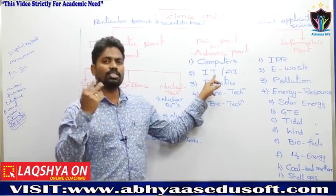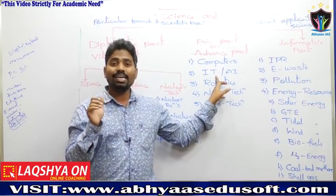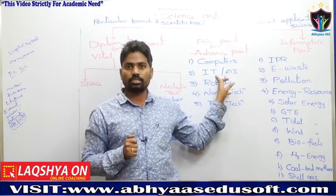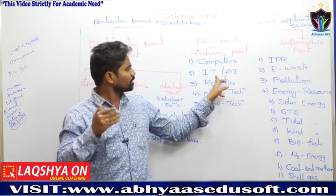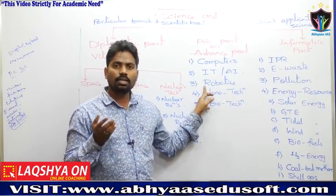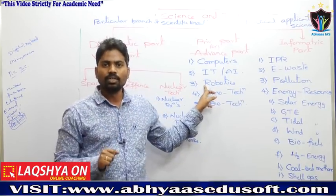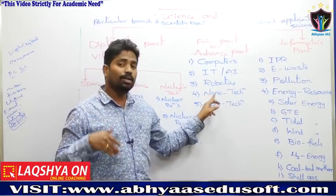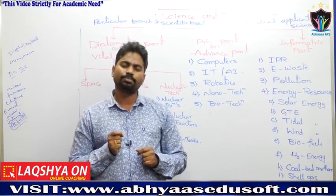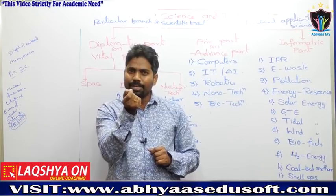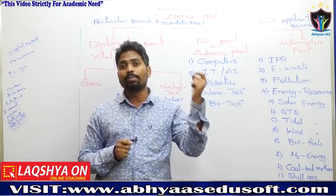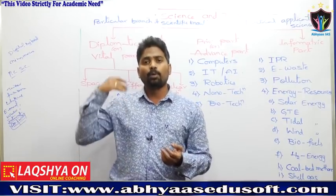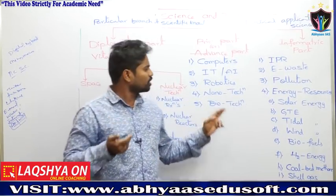We'll also discuss e-commerce (electronic commerce) and e-governance (electronic government) in the IT sector. The third part of advanced technology is automation and robotics — types of robots and robotics. Similarly, nanotechnology: nano means one millionth part of a millimeter or one billionth part of a meter. Nanotechnology is commonly used in water purification and pollution treatment.